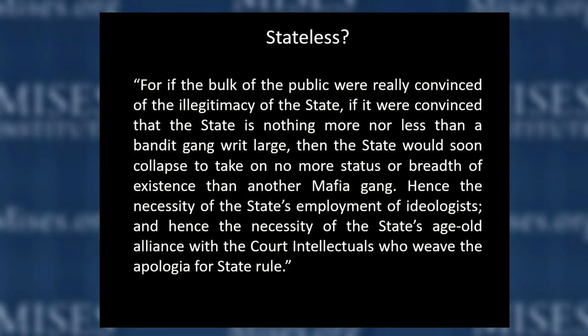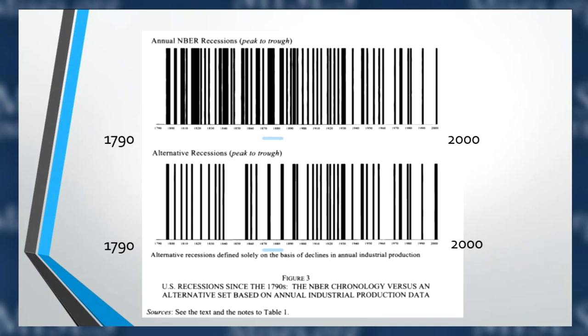There's an old saying that a picture is worth a thousand words. The top part of this chart shows annual NBER recessions — black bars representing recessions — from 1790 to 2000. The Federal Reserve was created right around here. Looking at the old NBER data, notice how many more recessions there were before the Fed, how much more severe and frequent they appear. After the Fed, the black bars are much less frequent and much thinner.